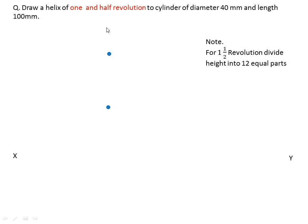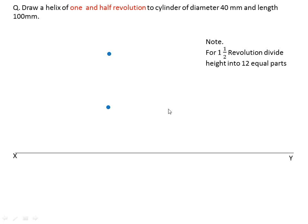The next problem is: draw a helix of one and a half revolutions on a cylinder of diameter 40 mm and length (height) 100 mm. That means the cylinder has diameter 40 mm and height 100 mm.